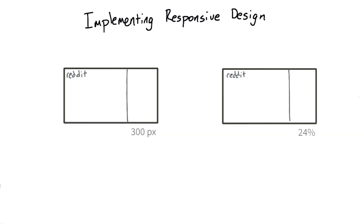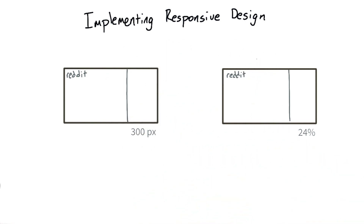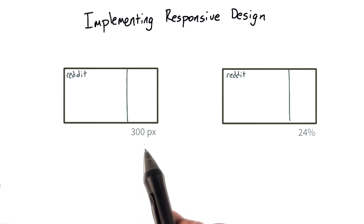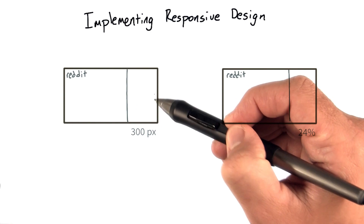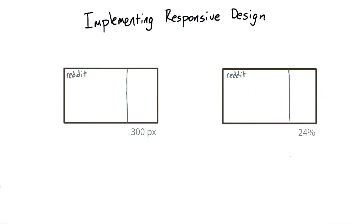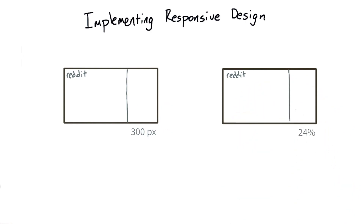Let's start thinking about how to implement responsive design using CSS. In order for a website to resize based on the size of the browser, we're not going to be able to use a fixed pixel size to determine the width of columns. Instead, we'll have to use percentages to decide how wide our columns should be.